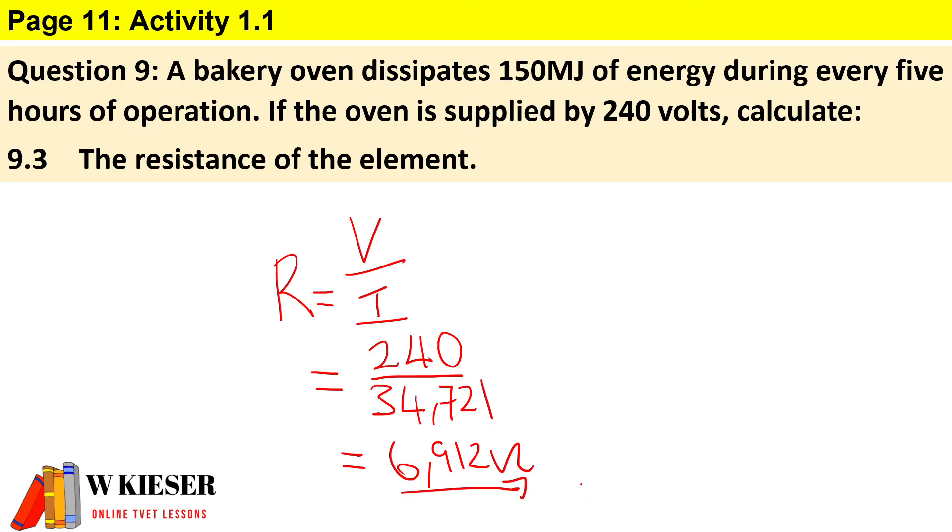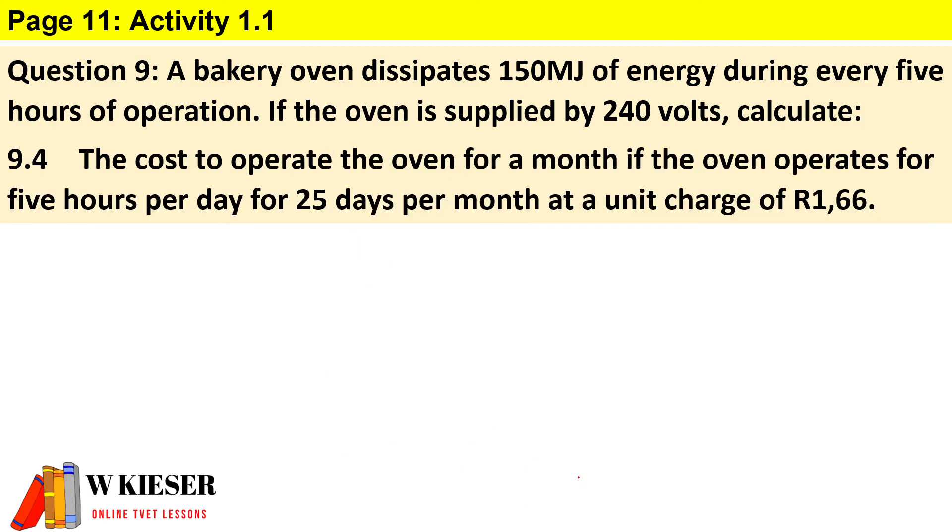The final question, 9.4: We need to calculate the cost to operate the oven for a month if the oven operates for 5 hours per day for 25 days per month at a unit charge of R1.66.